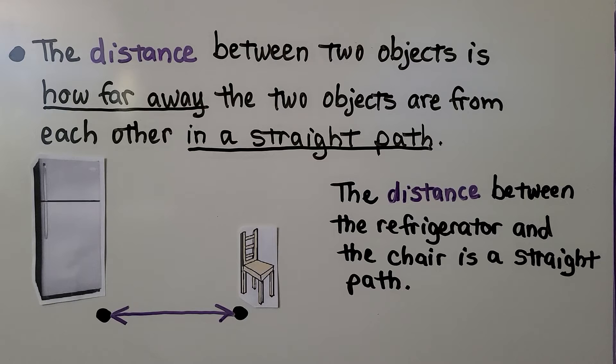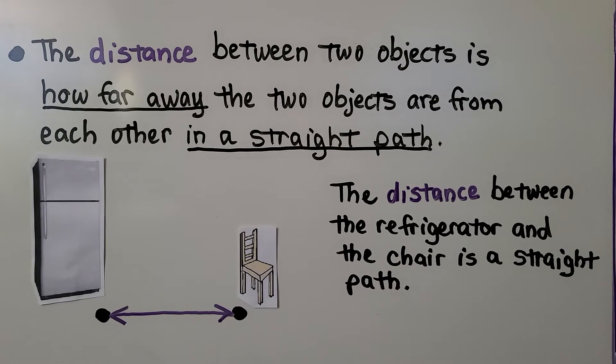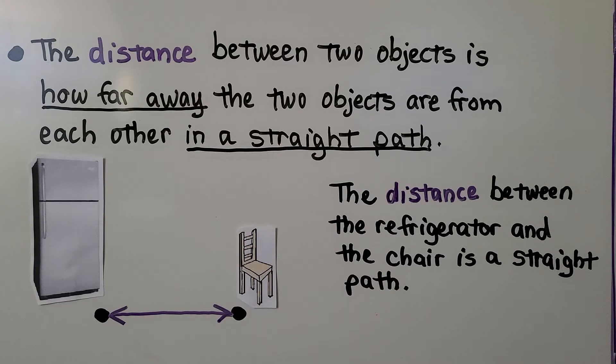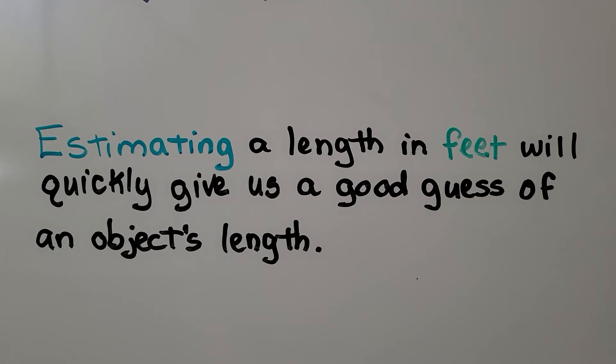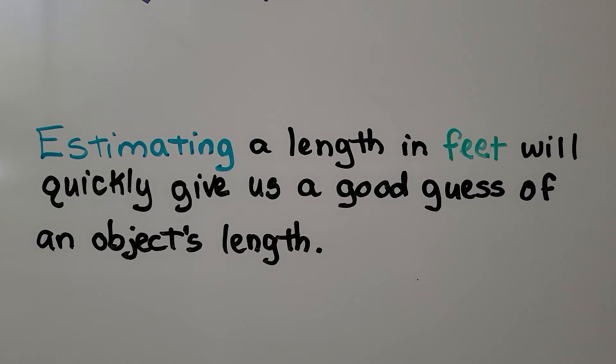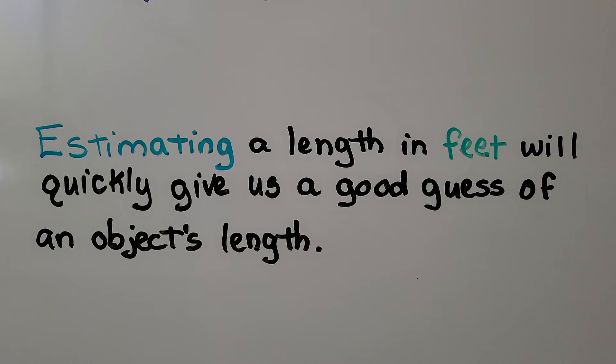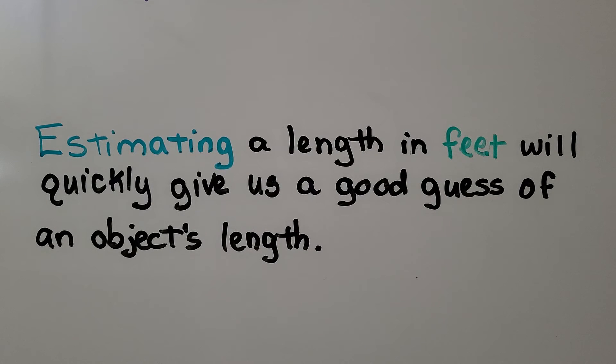The distance between two objects is how far away the two objects are from each other in a straight path. The distance between the refrigerator and the chair is a straight path. That's its distance, and we can measure that. Estimating a length in feet will quickly give us a good guess of an object's length.